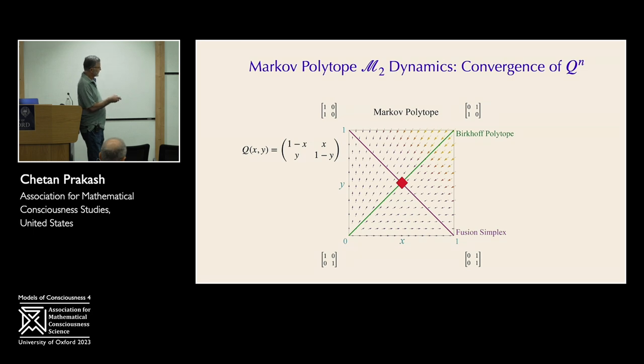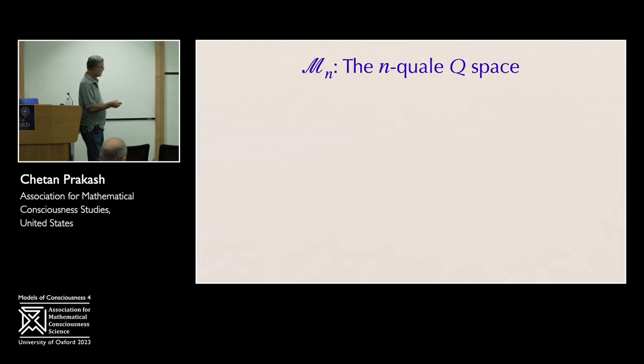But you can see that there's a certain dynamics taking place over here with the arrows. And by that I mean, if you run the Markov process with Q on the state space X, then that process is going to tend towards something. Except in one case in this particular corner, which is just periodic, all of the other processes are going to tend towards what we call the fusion simplex, where these two colors fuse together, essentially, and give you yellow.